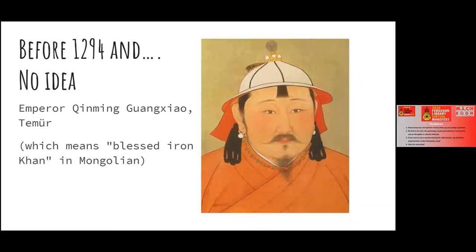The Yuan dynasty was the Mongol version of China — just after Genghis Khan took over. He basically took over the world from China all the way to the brink of Europe, but he died and his wealth and lands got split up between his sons and grandsons.